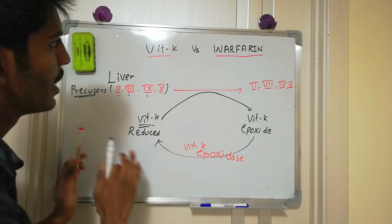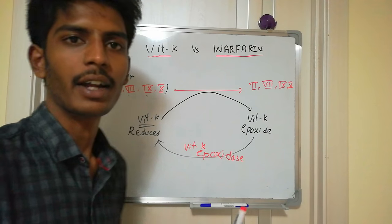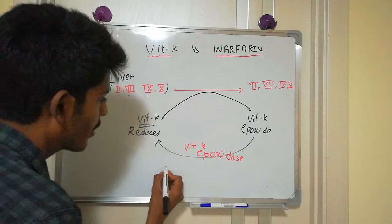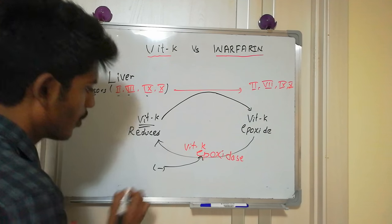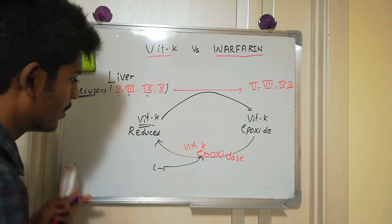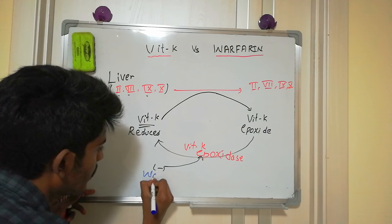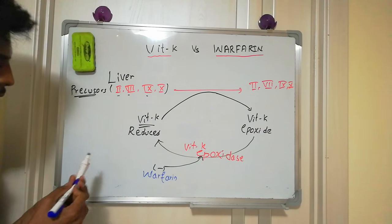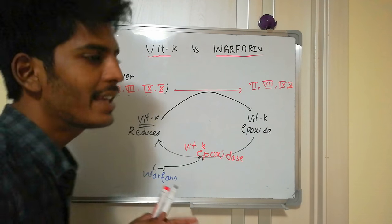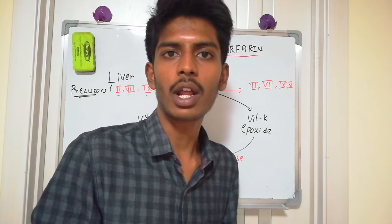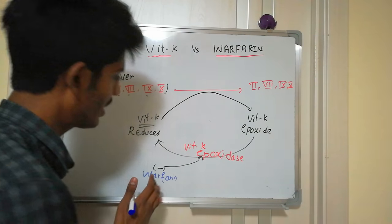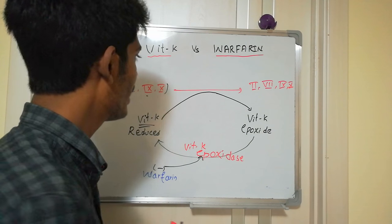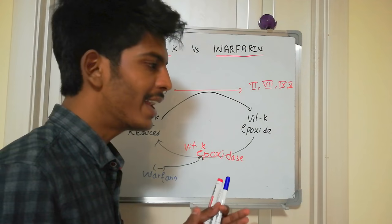This is how vitamin K works in the formation of clotting factors. Warfarin comes and inhibits this enzyme — vitamin K epoxidase. By this mechanism, we understand that vitamin K is involved in the formation of clots or coagulation, while warfarin is an anticoagulant — specifically an indirect anticoagulant.